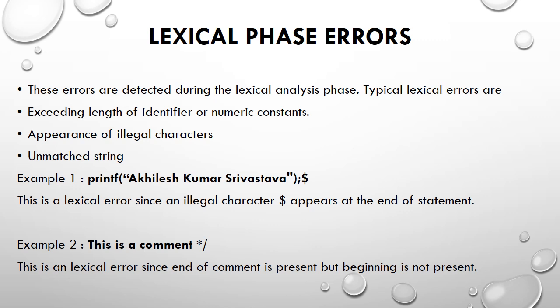Lexical phase errors are those identified during lexical analysis. One category is exceeding the length of identifiers or numeric constants. For example, if we have defined that an identifier cannot be more than 80 characters and you write an identifier of length 85, it will not be accepted and will throw a lexical error. Similarly, if a numeric constant size is too large beyond the defined limit, it will also throw a lexical error.